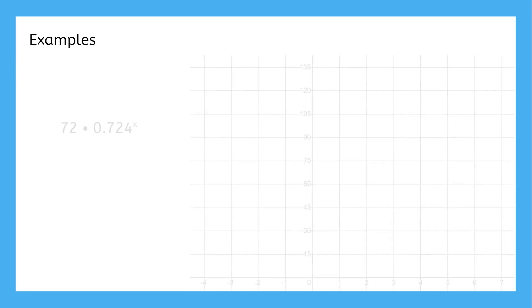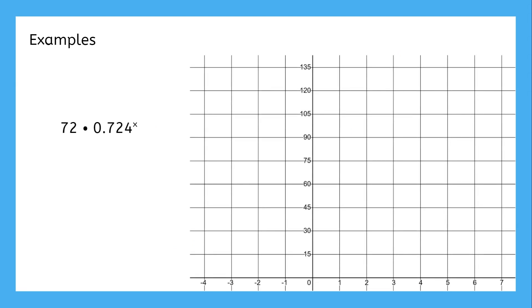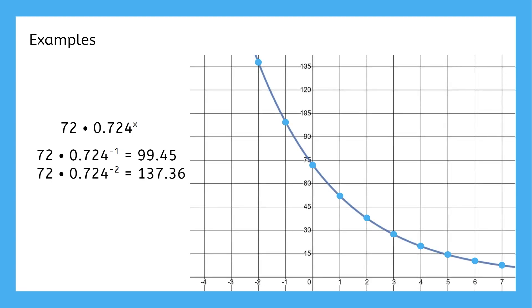Now that we understand what exponential decay models look like, it'll be much easier to graph them. First, we plot that initial value and then multiply by the growth factor for every one unit to the right. The left side is also calculated the same way as with exponential growth. For each unit to the left, divide by the growth factor until you can't go any farther.